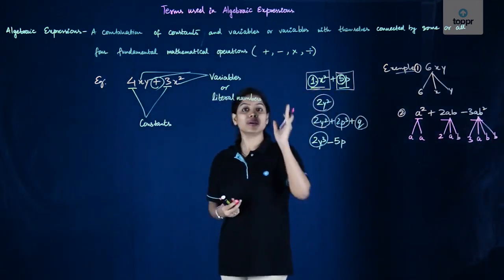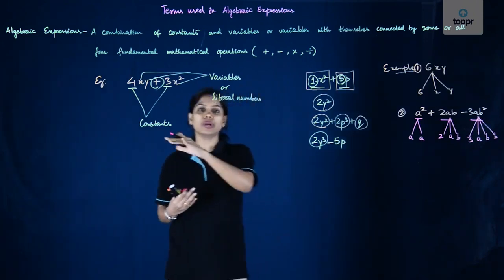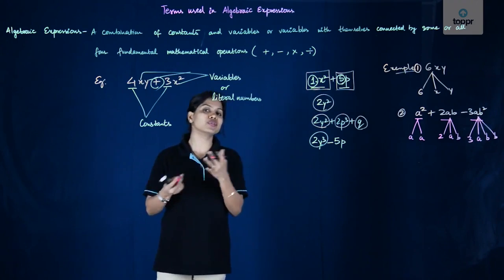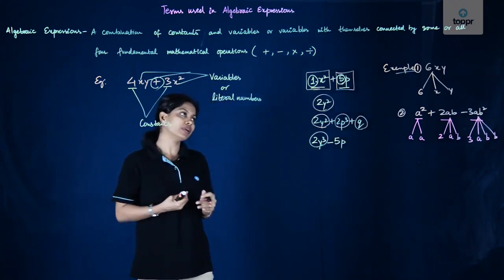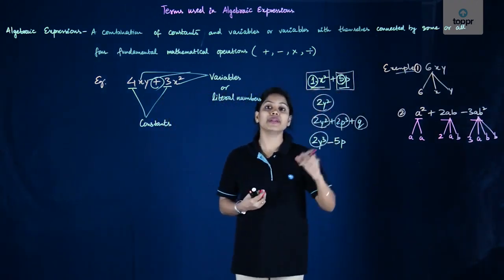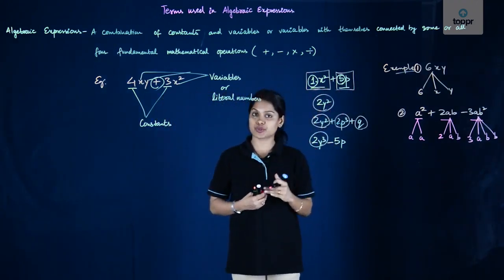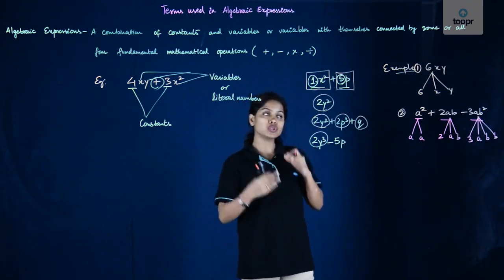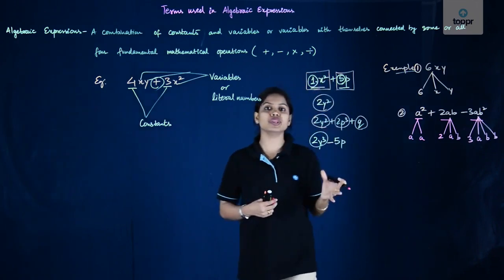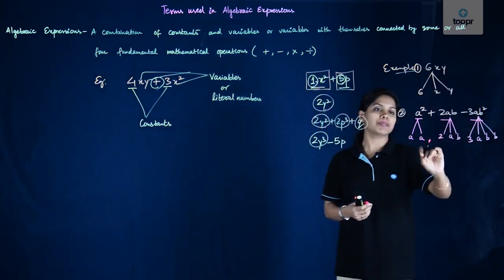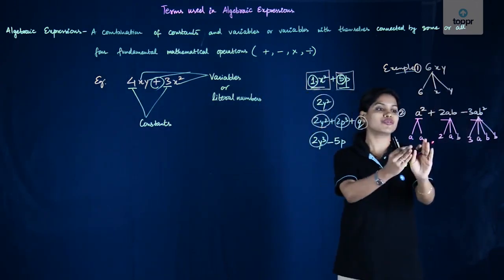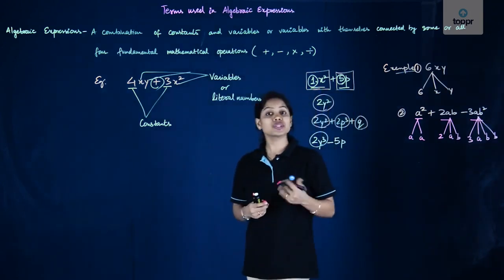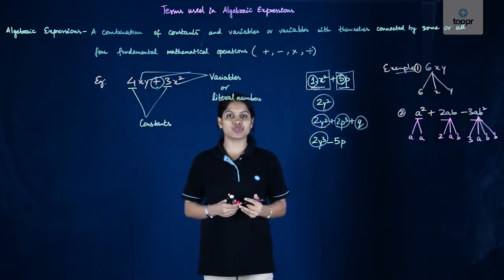So basically, the terms that we have learnt today are: what are constants, what are variables, and what are literal numbers — literal numbers and variables are the same thing. Apart from that, how many terms are there in each algebraic expression — we now know how to find the number of terms. We also know how to find the factors of each term, as written separately in this example. So these are the various terms used in algebraic expressions.